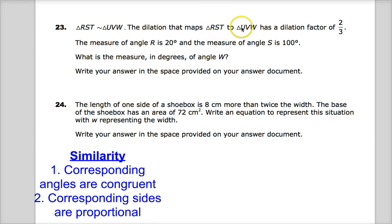For instance, angle RST will be corresponding to UVW, unless it says the letters in a different order. By ordering this the way, they're telling you what the corresponding angles are. And then corresponding sides are proportional, which is to say that I can create a ratio between sides and it's the same for both, for all sides in the triangle.